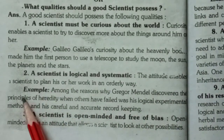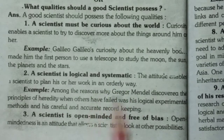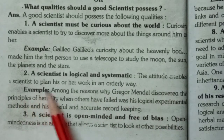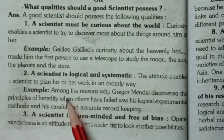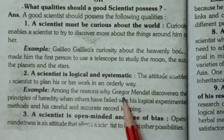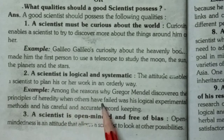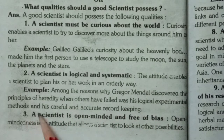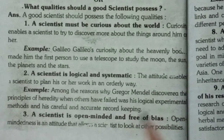The second quality is that a scientist is logical and systematic. This attitude enables a scientist to plan his or her work in an orderly or systematic way. For example, among the reasons why Gregor Mendel discovered the principles of heredity when others had failed was his logical experimental methods and his careful and accurate record keeping.